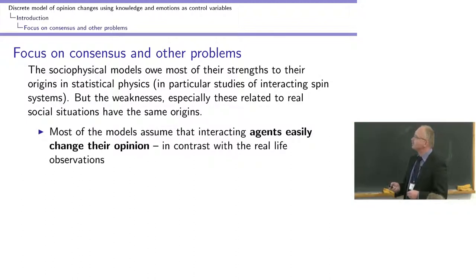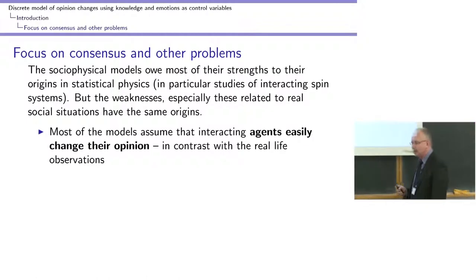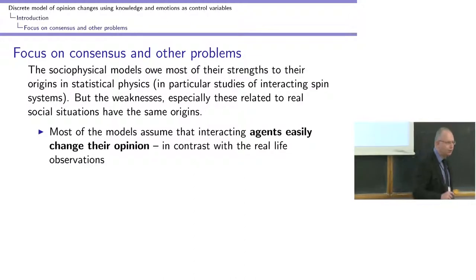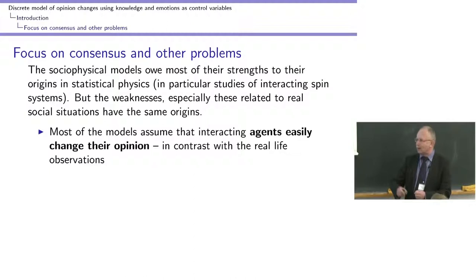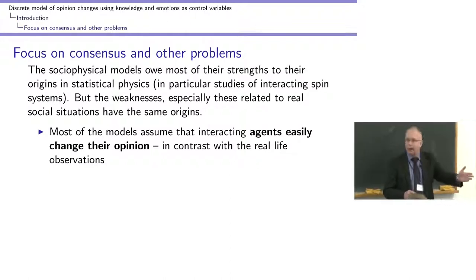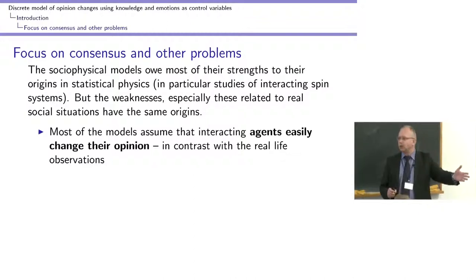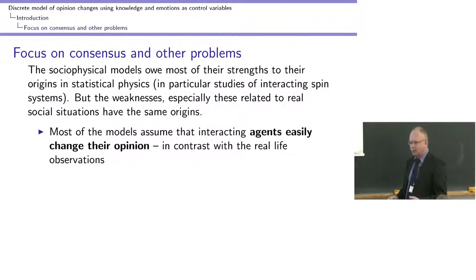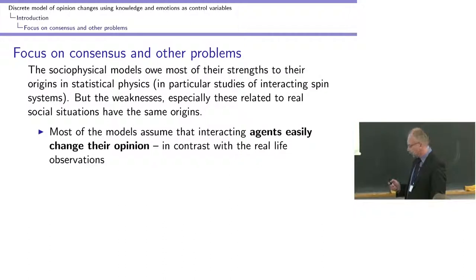The weaknesses of the previous models: the assumption that opinion change is easy is convenient for simulations because you can run them quickly. But we know that we don't change our opinion so easily. Many models assume that if two persons interact, at least one of them will change opinion. Yet we know that we talk with people and stay the same — we exchange information without changing ourselves. That has to be taken into account in the model.